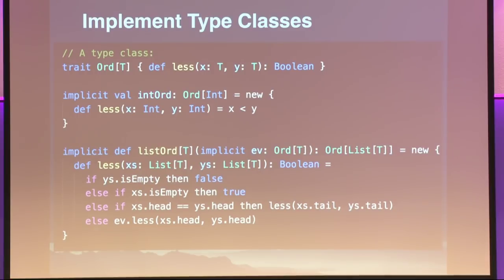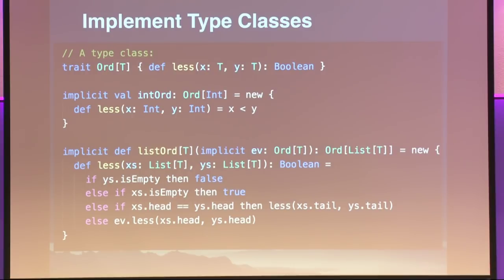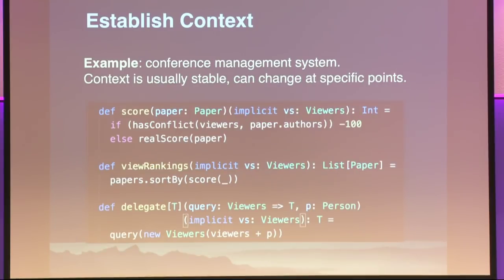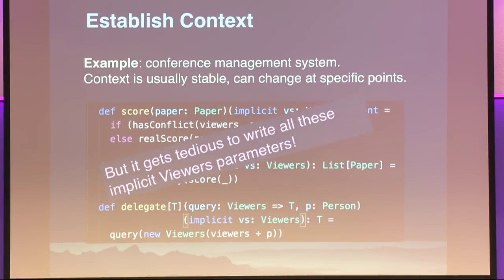When we introduced that first, my first talk about this was called 'Poorman's Type Classes' because it says, well, we already have normal classes, we can't have type classes as well, but we have these little implicit parameters and they can actually do all that. The T colon ORD syntax just means that there is an implicit evidence parameter of type ordered of T. That's all it means. And then I use these evidence parameters to actually do the element comparison.